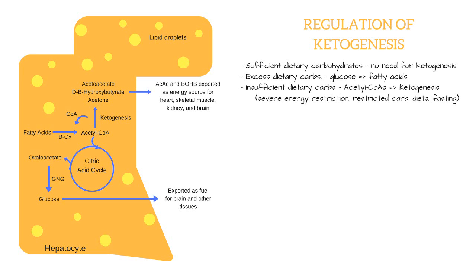Under conditions of excess carbohydrate consumption, when there is more than enough to satisfy energy needs and more than enough to fill glycogen storage capacity, some of this glucose is stored or converted for storage into fatty acids.